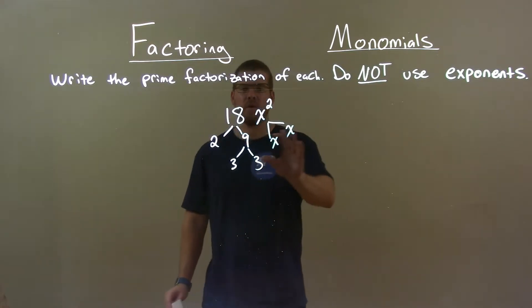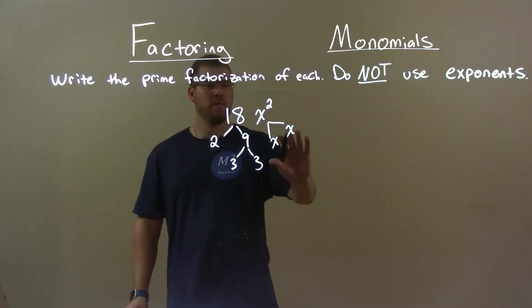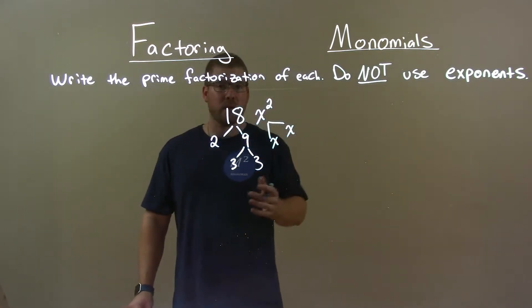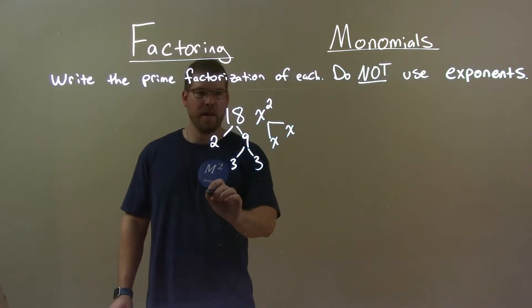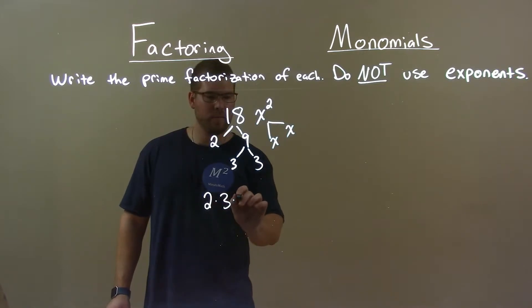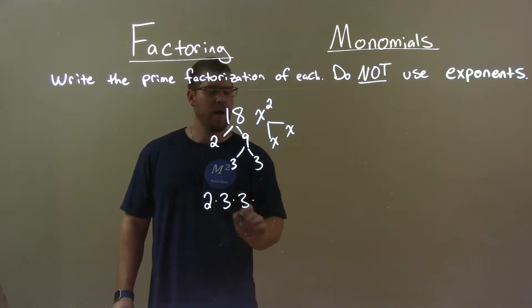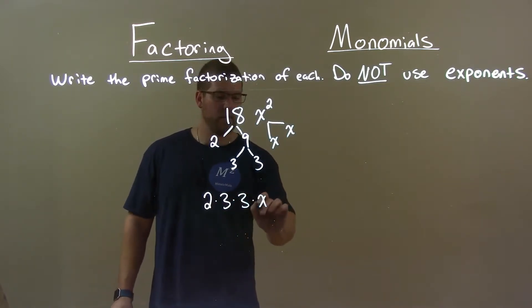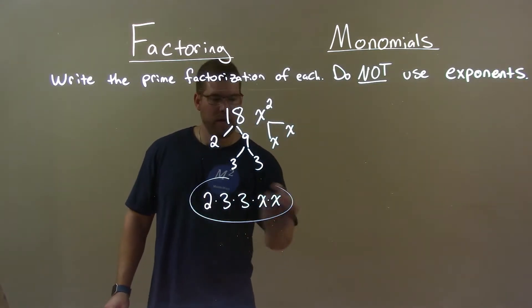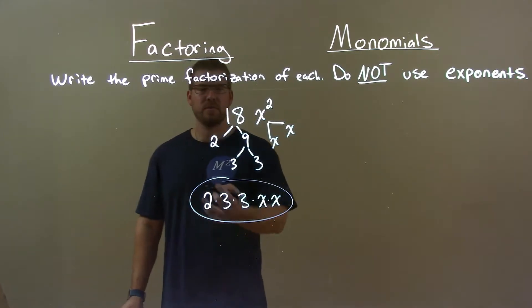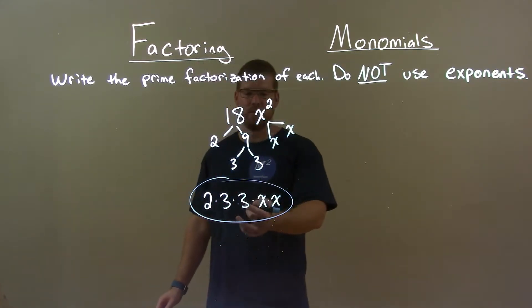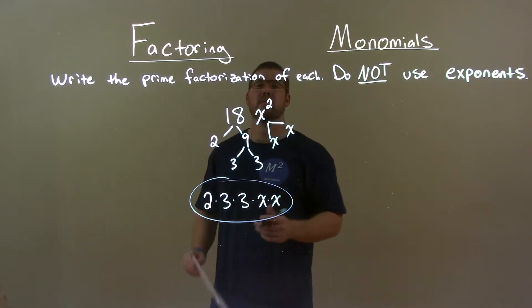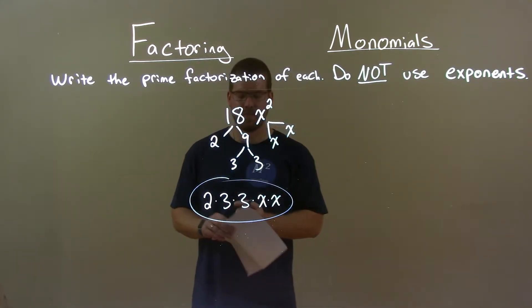So if we combine all of these facts, we'll get our answer. 18 is 2 times 3 times 3, and x squared is x times x. So here we have our final answer: 2 times 3 times 3 times x times x.